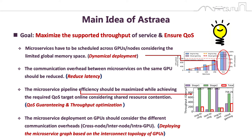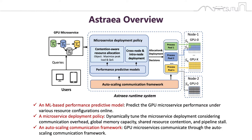We propose a runtime system, Astria, to achieve the above purpose. Astria is composed of an online performance predictor, a microservice deployment policy, and an auto-scheduling communication framework. The AI-based microservice performance predictor predicts global memory bandwidth usage, duration, and throughput of each GPU microservice under various resource configurations. The deployment policy considers communication overhead, global memory capacity, shared resource contention, and pipeline balance while managing GPU resources. Similar to gRPC for CPU, the proposed communication framework enables auto-scheduling without modifying microservice source codes, whether microservices are on the same GPU, different GPUs, or different nodes.